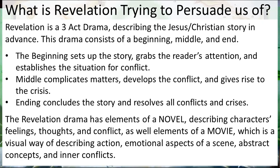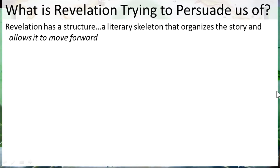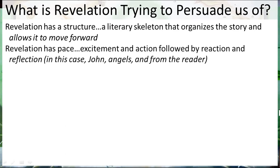The Revelation drama has all the elements of a novel — it describes characters, feelings, thoughts, and conflict. It also has elements of a movie, describing action, emotional aspects of a scene, abstract concepts, and inner conflicts. It also has a literary skeleton that organizes a story and allows it to move forward. Revelation also has a pace — that's the excitement and the action, followed by reactions and reflections: John's reactions, the angels' reactions, and also the readers' reactions.